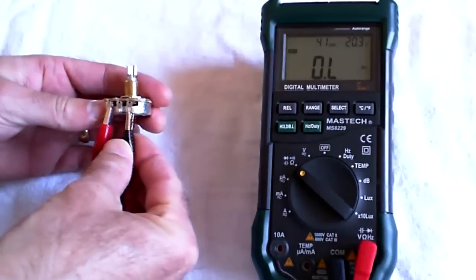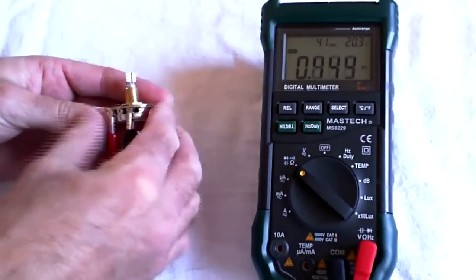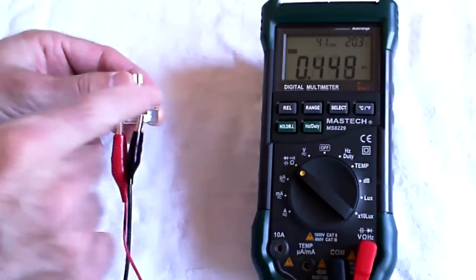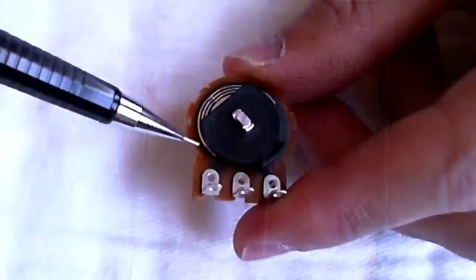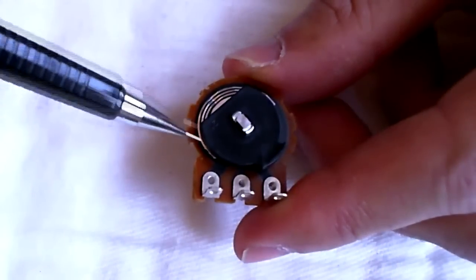That amount of conductive material is what determines the resistance of this pot. In fact, if you just take your multimeter and connect it across these two lugs, it doesn't matter where the shaft is. That tells you what the overall resistance of the pot is, and it's based on the amount of carbon material printed there.